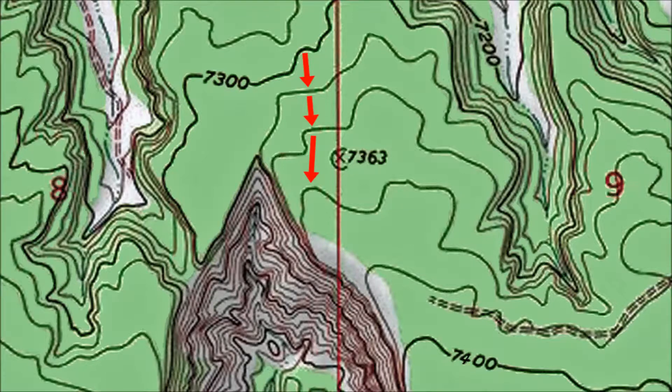Traveling three contour lines up should take us to the 7,360 foot contour line. Traveling four contour lines up from the index contour line should take us to the 7,380 foot contour line. Traveling five contour lines up from the index contour line should take us to the 7,400 foot index contour line.